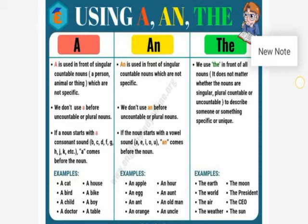Now let's see the usage of an. An is used in front of singular countable nouns which are not specific. That means an is also used before singular nouns which are not specific — it can be anything, or anything in general we talk about. We don't use an before uncountable or plural nouns. For example: an apple, an egg, an ant, an orange, an hour, an aunt, an old man.